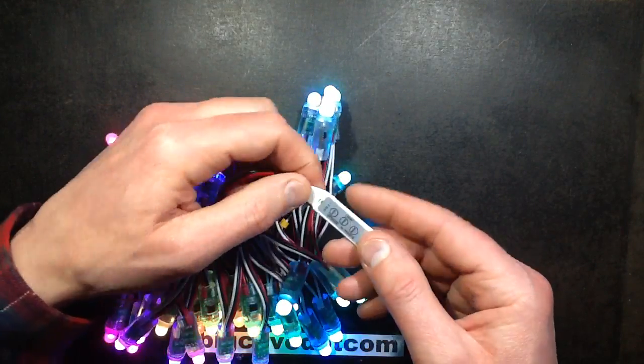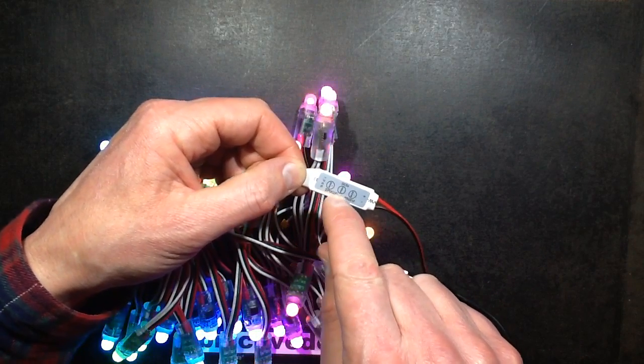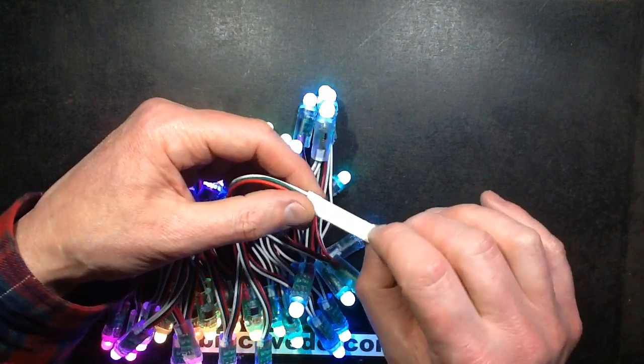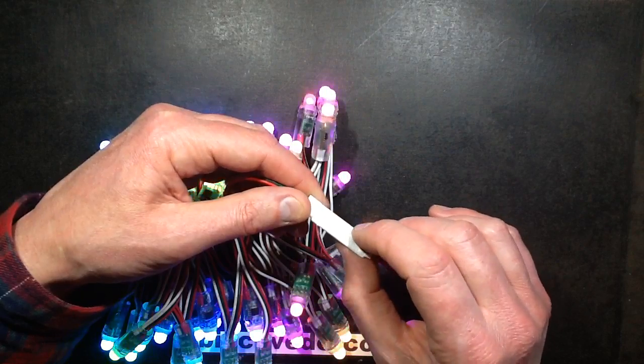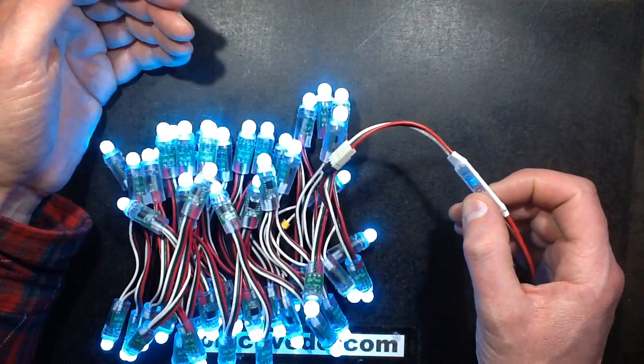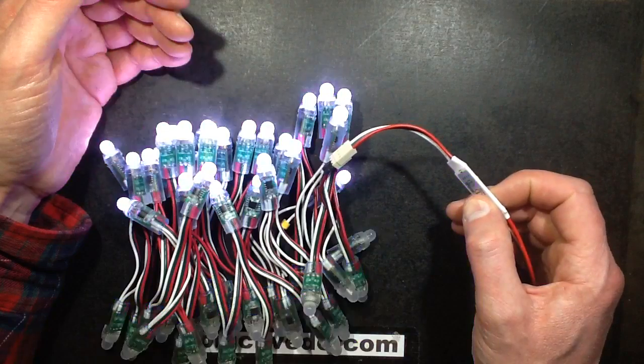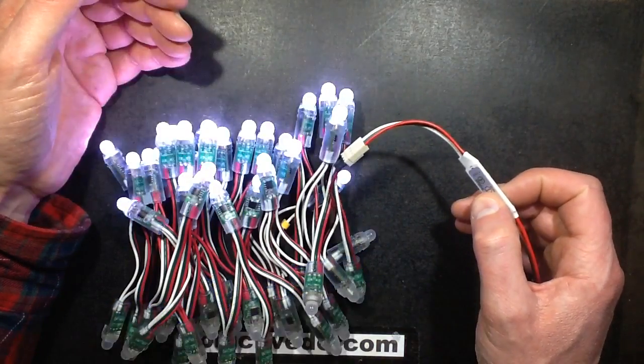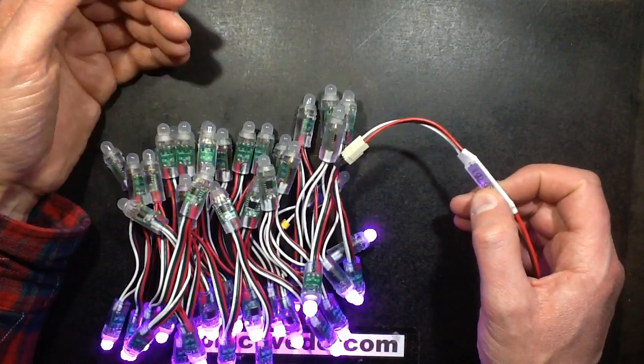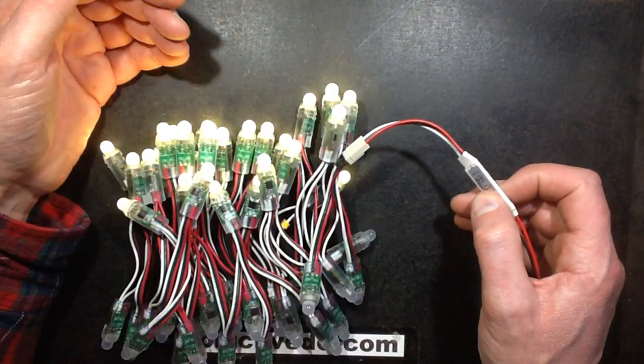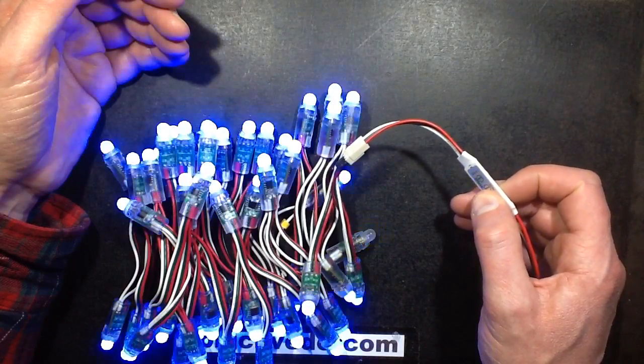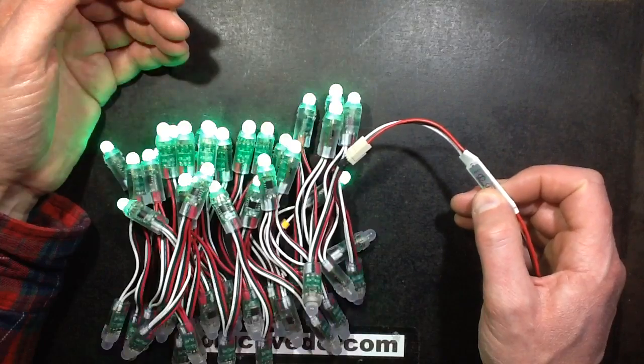This little controller here has various effects. It's got three buttons. It looks like the buttons are on the front because it's marked there, but there are actually little recessed buttons here. You can step through various effects, most of which are absolutely terrible.